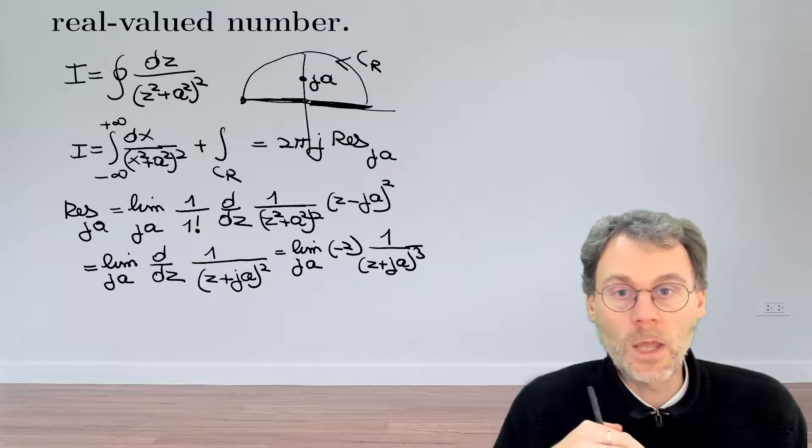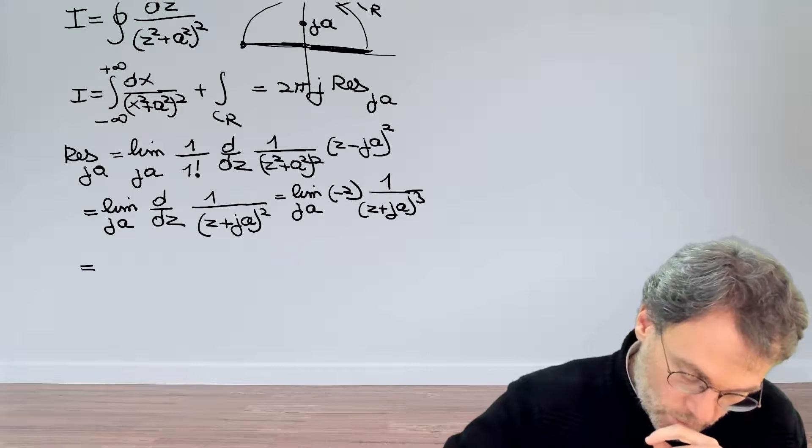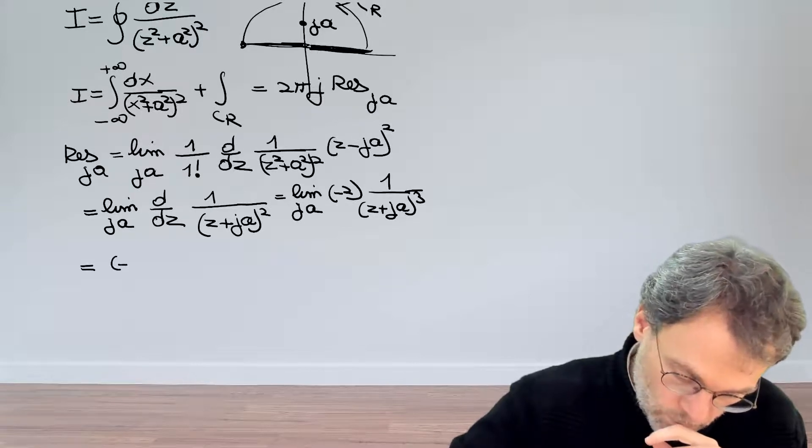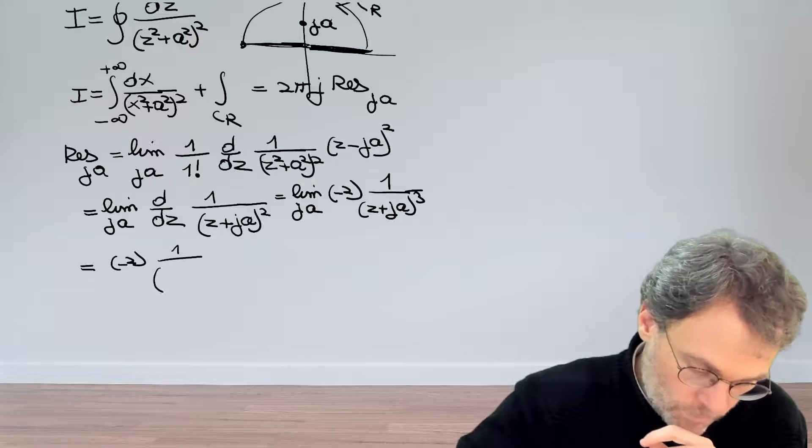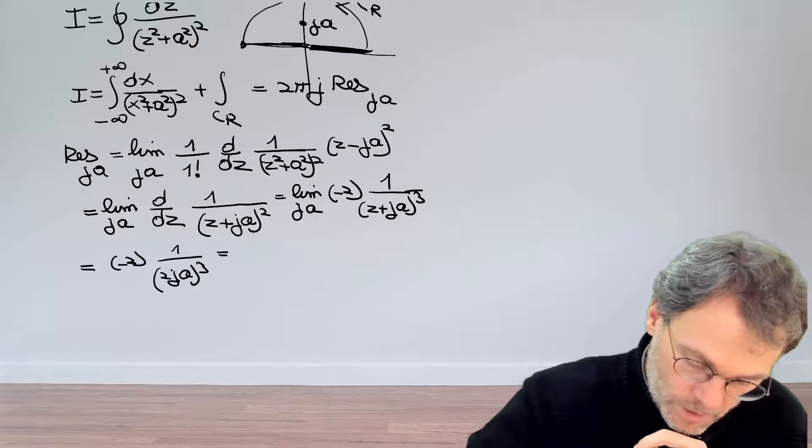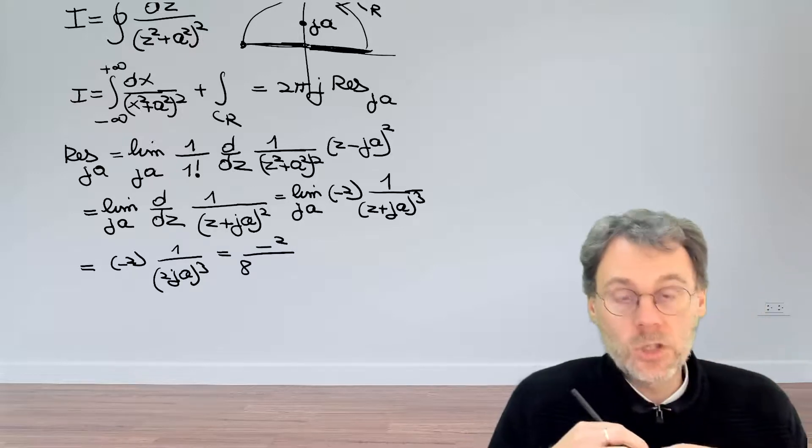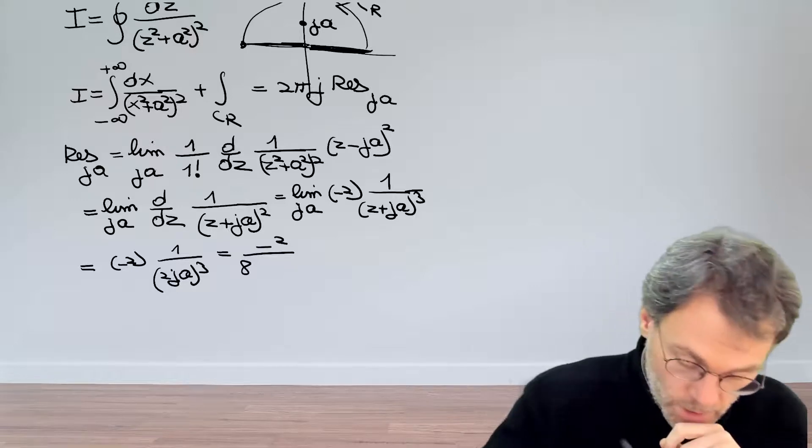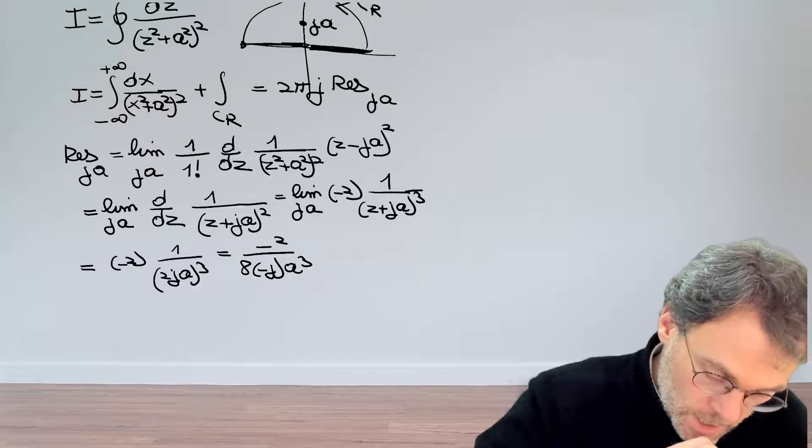Good, let's continue. So that's basically minus two, one over, and then we have two ja cubed. So that's minus two, eight, j squared is minus one, so times j is minus j, and then a cubed.